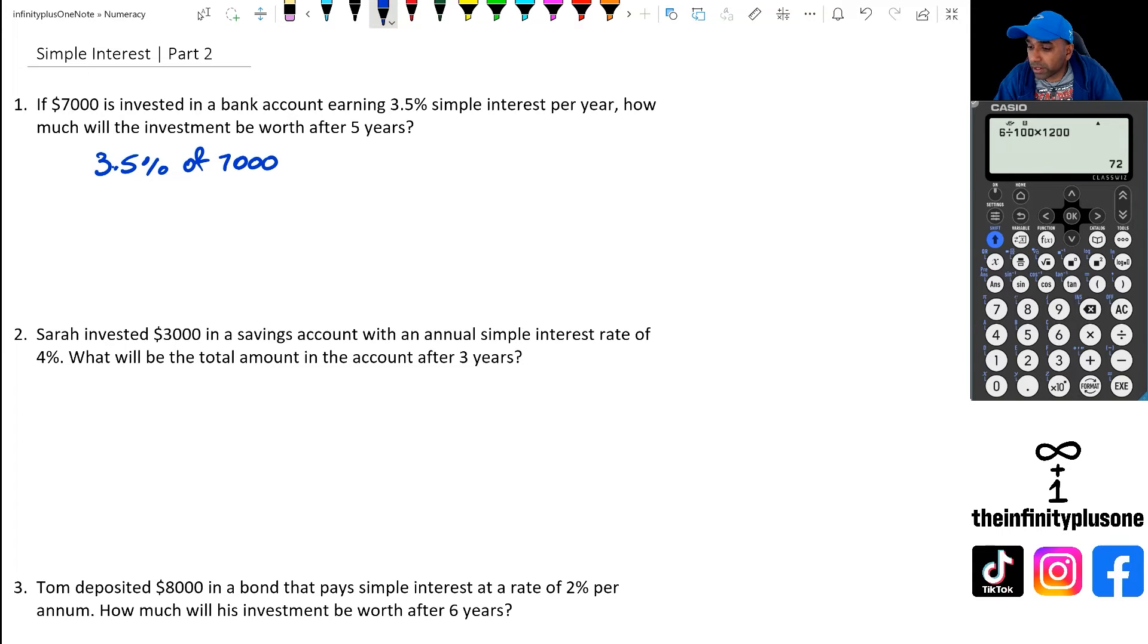To do that, we're going to use the calculator. So we've got 3.5 divided by 100, because that is what percentage into fraction is. We're going to multiply it by 7,000. And when we do this, we are getting $245.